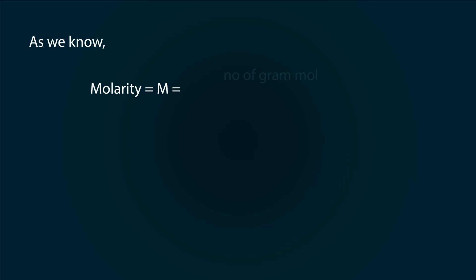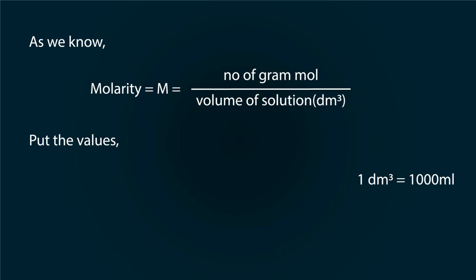As we know molarity is equal to number of gram moles divided by volume of solution in dm cube. We also know that 1 dm cube is equal to 1000 ml. So molarity is equal to 8 grams of NaOH dissolved in 1000 ml of distilled water.